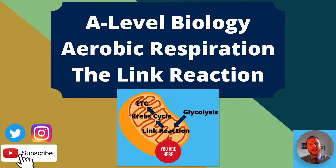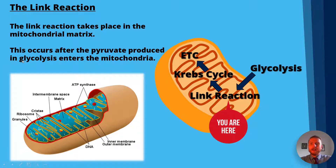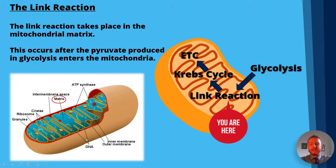Let's take a closer look at AQA A-level biology: the link reaction. The link reaction takes place in the mitochondrial matrix, the fluid-filled space within the mitochondria. We can see the matrix in the bottom-left diagram, along with the cristae — the folded regions of the membrane — as well as the outer membrane, ribosomes, and DNA. The presence of ribosomes and DNA is evidence that the mitochondria was once a prokaryotic organism.